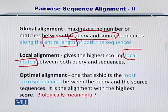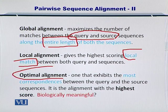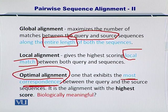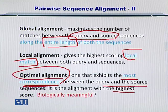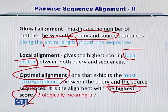There is a third category of sequence alignment as well, which is not a formal category, and that is the optimal alignment. This kind of alignment exhibits the most correspondence between the query and the source — it is the alignment with the highest score. We will discuss how to score these alignments later and return to optimal alignment at that point.